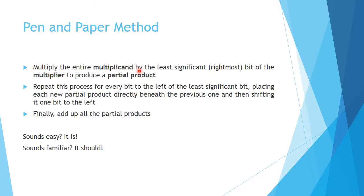For the pen and paper method, we're going to first multiply the entire multiplicand by the least significant, or rightmost, bit of the multiplier to produce a partial product. Then repeat this process for every bit to the left of the least significant bit, placing each new partial product directly beneath the previous one and shifting it one bit to the left. Finally, we'll add up all the partial products.